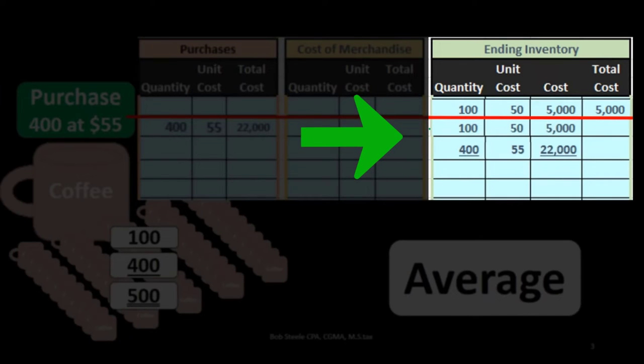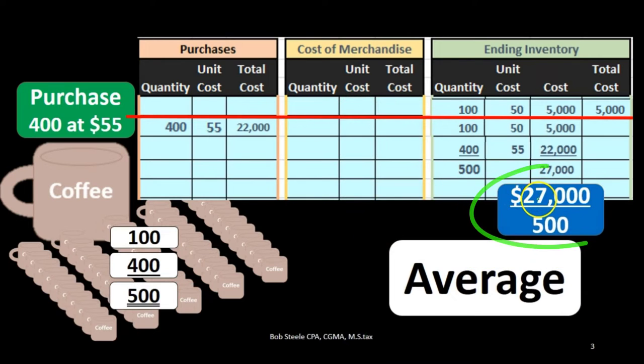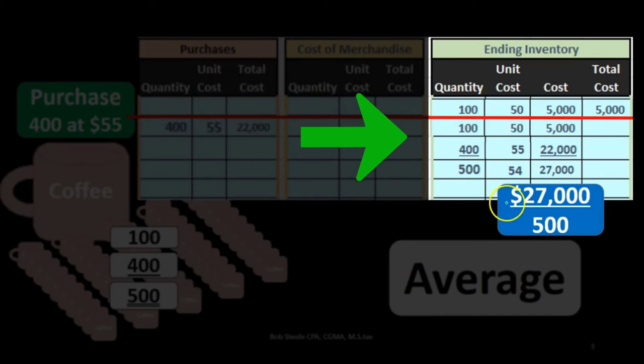We've got the 100 units at 50. We've got 400 units at 55. That means we have 500 units and the total cost then is the 5,000 plus the 22,000 or 27,000. We can then calculate the average to be 27,000 divided by 500 or 54,000, which is obviously closer to the 55 number than to the 50 number.